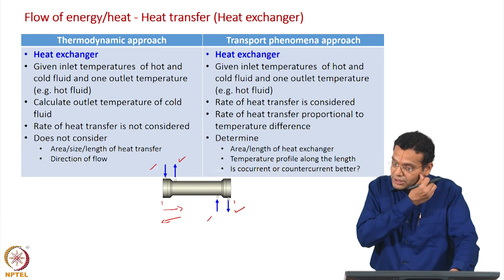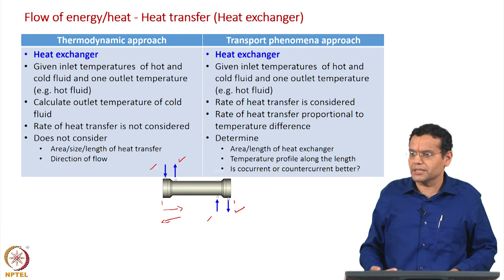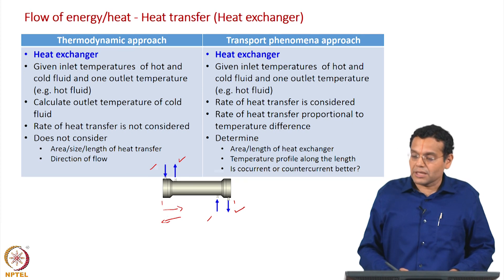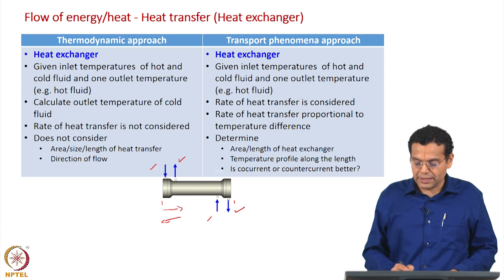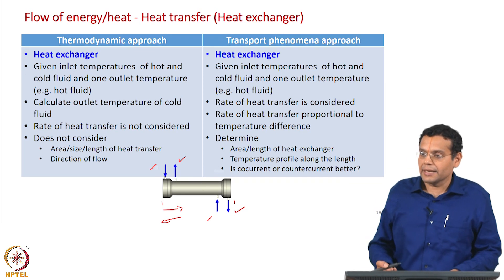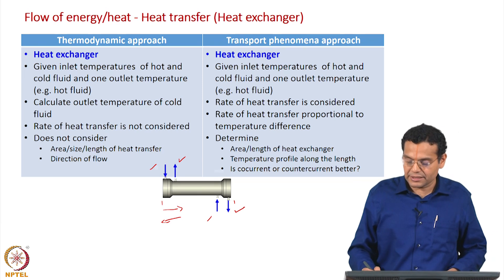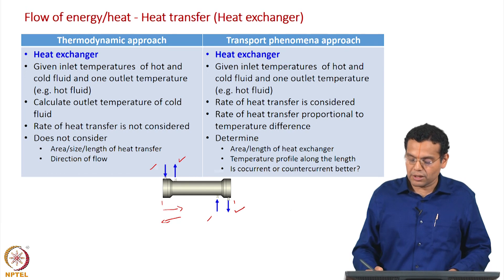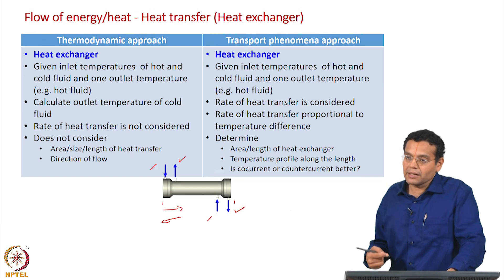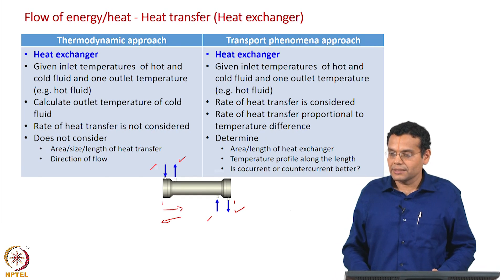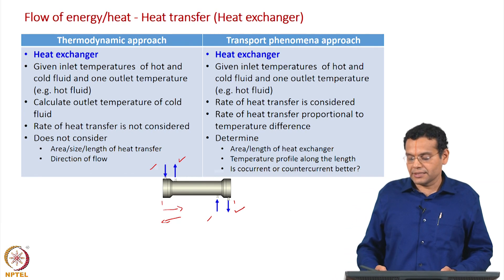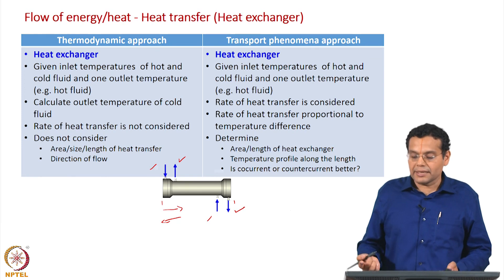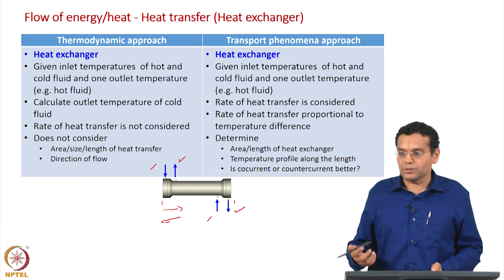Using a transfer phenomena approach for the same heat exchanger case, the rate of heat transfer is considered — proportional to the temperature difference between the hot and cold fluid streams. Hence you can determine the area and length of the heat exchanger, the temperature profile along the length, and also answer whether counter-current or co-current mode is better. Just because it accounts for the rate of heat transfer, the scope of analysis widens considerably.